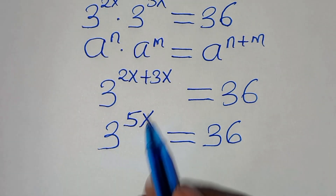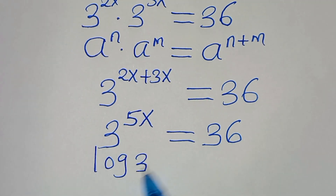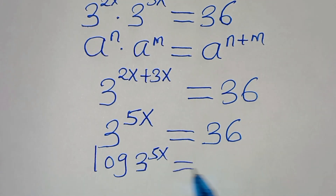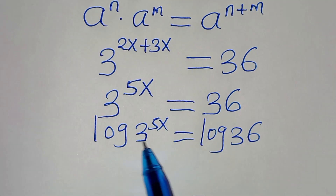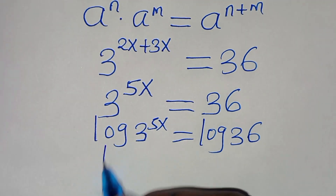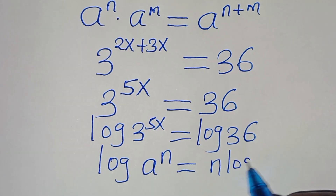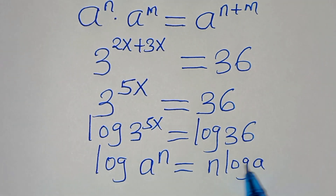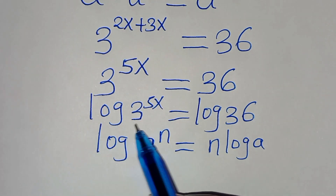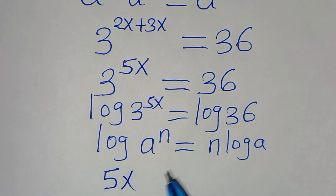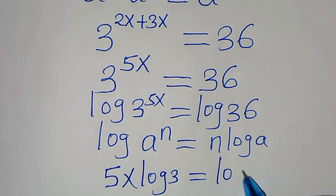To solve for x, we introduce logarithms on both sides, giving us log of 3 to the power of 5x equals log 36. Since log(a^n) = n·log(a), applying this power property, log 3 to the power of 5x becomes 5x·log 3, and this equals log 36.